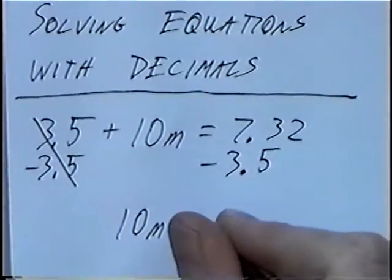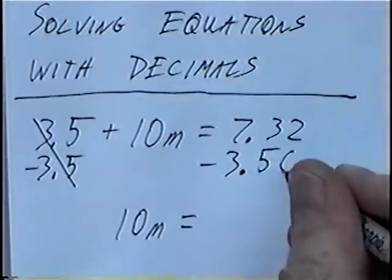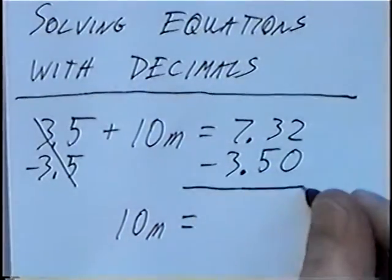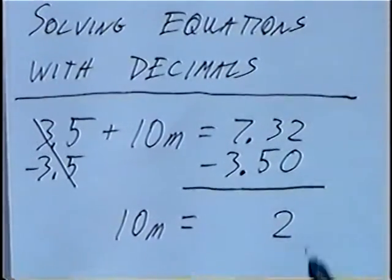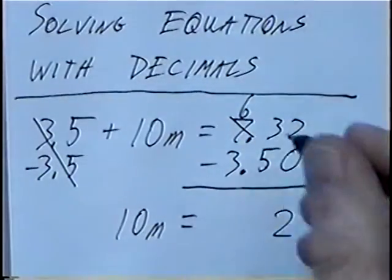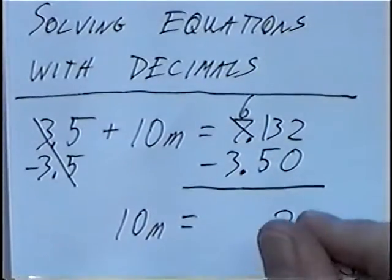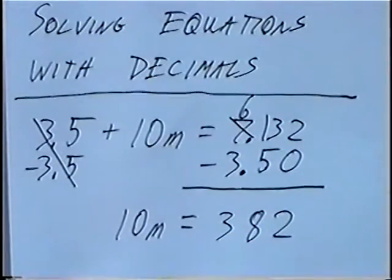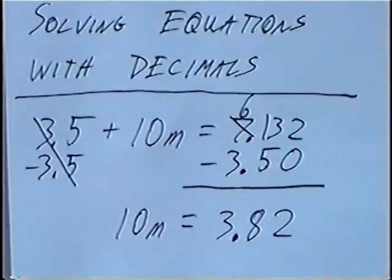Equals — you can add zeros to the end of the decimal, so negative 3.5 is the same as negative 3.50. Then we subtract: 2 minus 0 would be 2. For 3 minus 5, we can't subtract, so we'll borrow from the next number, which becomes a 6 and then a 13. 13 minus 5 would be 8, and 6 minus 3 would be 3. When you subtract decimals, the decimal comes straight down, so we'll have 3.82.